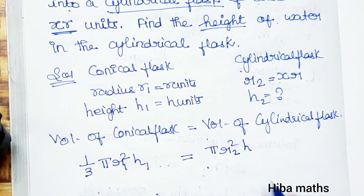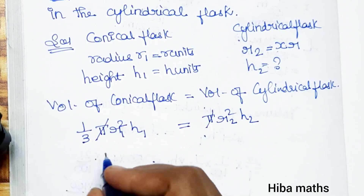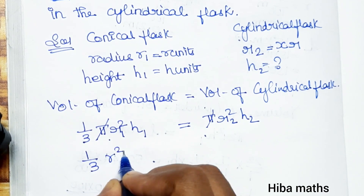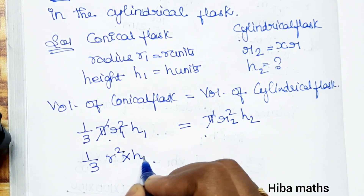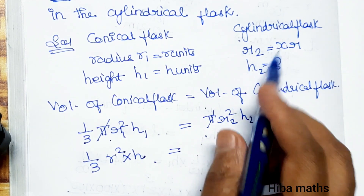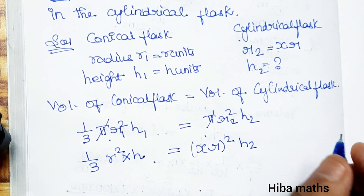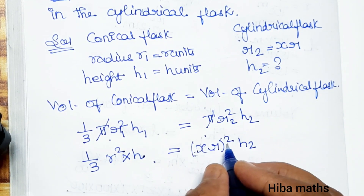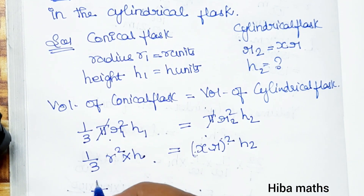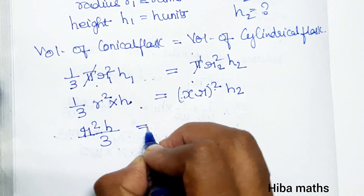Now, the common π cancels. We get (1/3) × r₁² × h = r₂² × h₂. Since the cylindrical flask has base radius xr, r₂ = xr, so r₂² = x²r². Substituting: (1/3) r²h = x²r² × h₂.